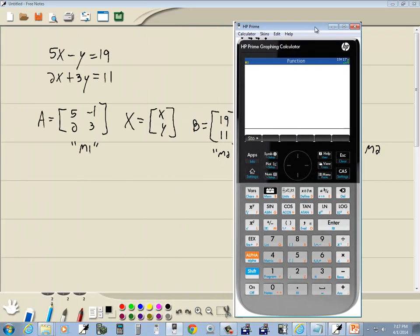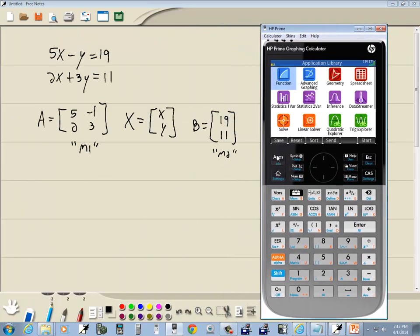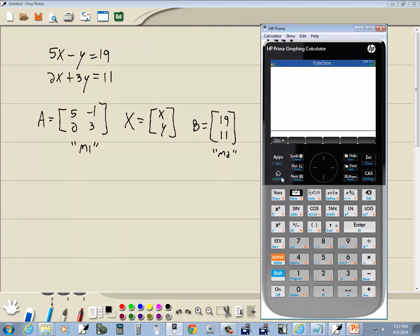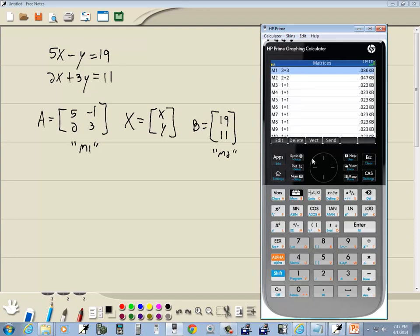Okay, let's go input our matrices first. If you're under your apps menu, let's do enter on function and press your home button. We're going to do shift 4 for matrix. And then I'm going to do a delete to clean out M1. And I'll click OK. Now I'll do an edit.